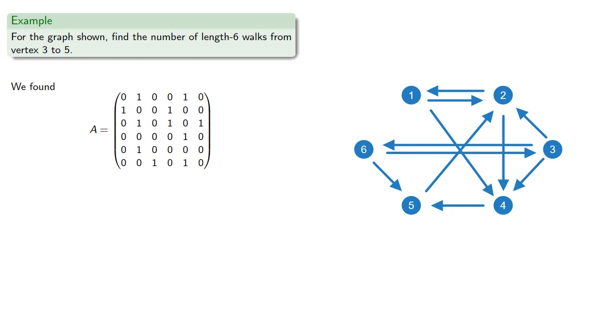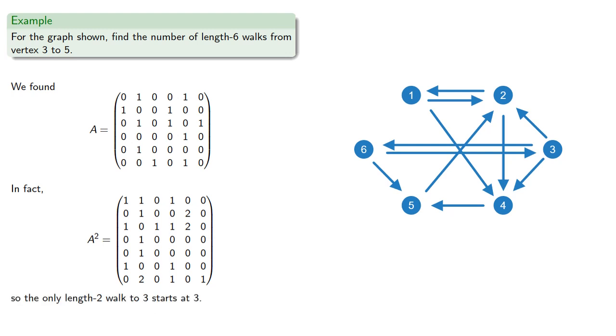In fact, let's take a look at shorter walks. We have the adjacency matrix, so we find A squared, and this means the only length 2 walk to vertex 3 also starts at vertex 3.